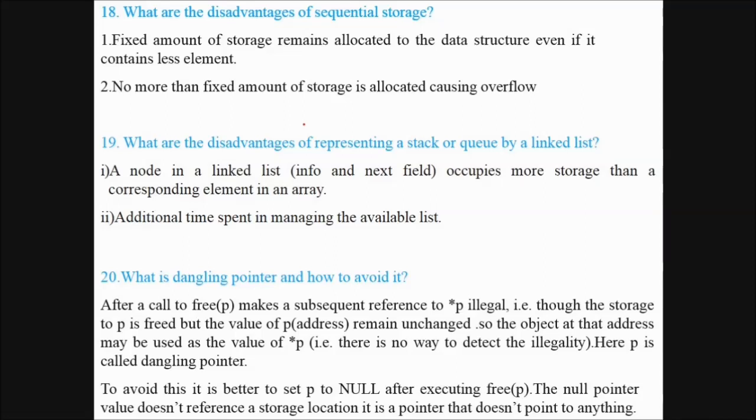What is a dangling pointer and how to avoid it? After a call of free function or any free function, this makes a subsequent reference to star p illegal, though the storage address remains unchanged, so the object at that address may be used as the value of star p. There is no way to detect the illegality. Here p is called the dangling pointer.